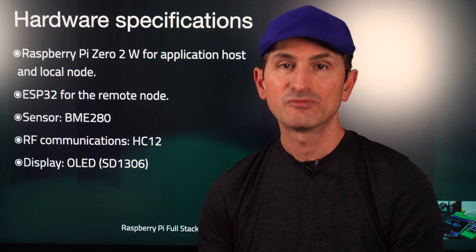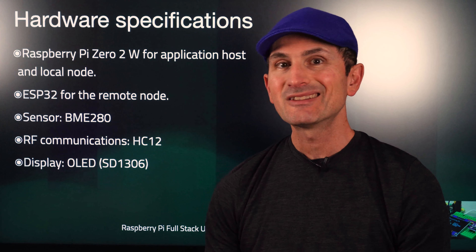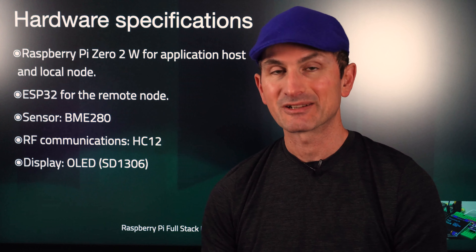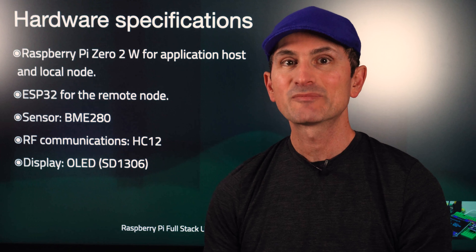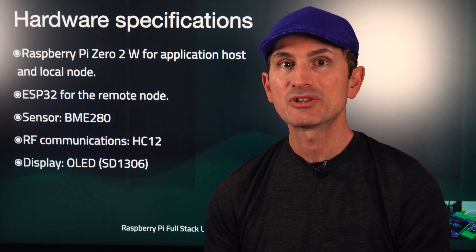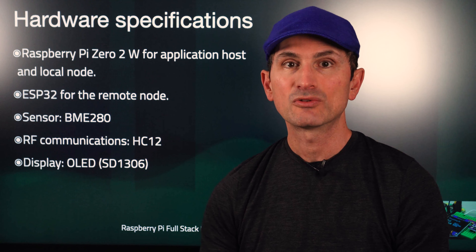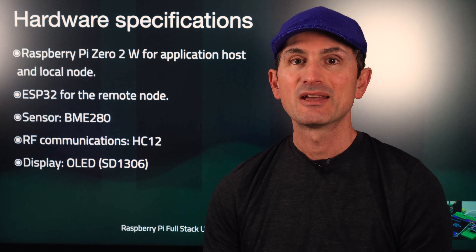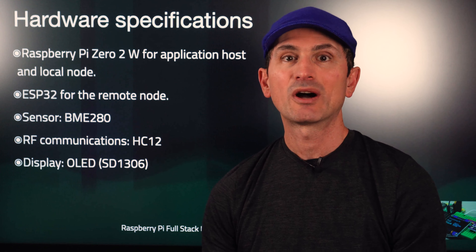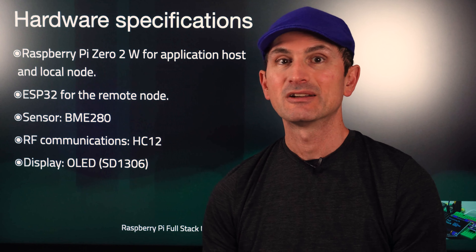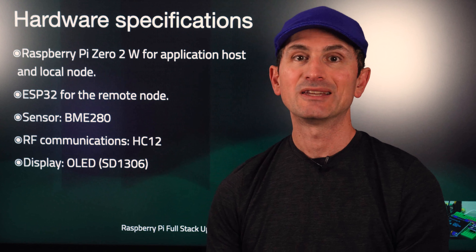These devices replace the original DHT22 and NRF24 from the original application. I'll discuss the details of the thinking behind these replacements later in the course. I have also introduced a new hardware component in the local node: an OLED display. This display provides a way to quickly get information on the status of the application without the user having to go to the command line or browser. If you already have your version of the original Raspberry Pi full-stack application working, you only need to acquire the new BME280 sensor, a HC12 transceiver, and the OLED display. Please see the following lecture for details on the hardware.